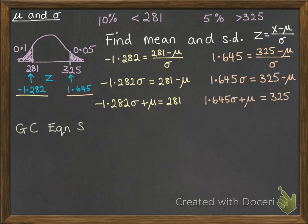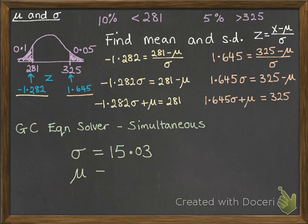Now we're going to put that into our graphics calculator using the equation solver for simultaneous equations. We've got two equations in two unknowns. You enter the coefficients of sigma and mu and what the final number is on the right-hand side and solve that. I'm going to give you a video on how to use the graphics calculator to solve these equations if you can't remember it from last year. If you put in those values, you get sigma is 15.03 and mu is 300.3.